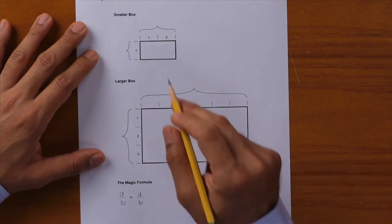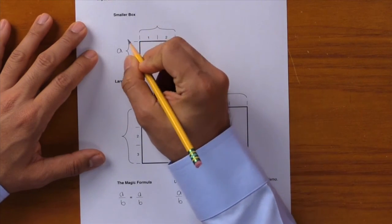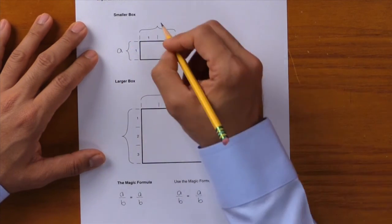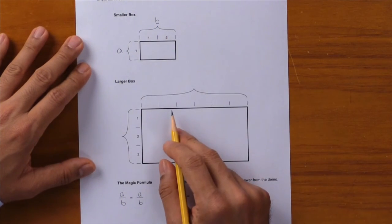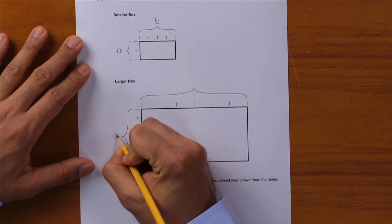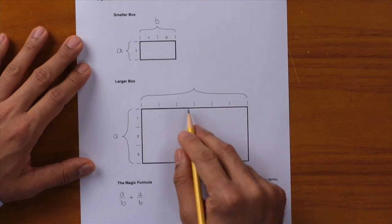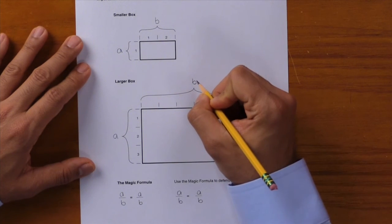Looking at the smaller box, we'll call the left side 'side a' and across the top we'll call this 'side b.' Now look at the larger box. The left side we'll also call 'side a,' and across the top this is 'side b.' Now we just put in the numbers where they belong.